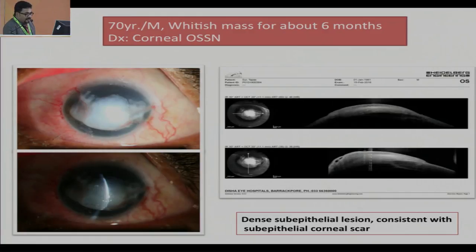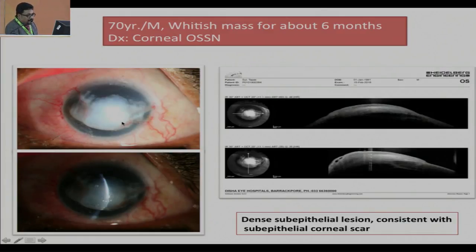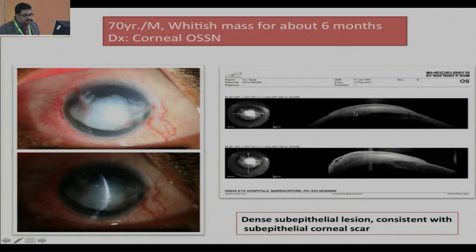Another patient was diagnosed as a case of pterygium because of feeder vessels and a corneal mass. On taking history, it was found that the patient underwent cataract surgery one year ago, had a dislocated intraocular lens, and one haptic of the IOL was touching the cornea. This correlated to localized pseudophakic bullous keratopathy with epithelial hypertrophy. On SOCT I could see dense subepithelial lesion consistent with subepithelial corneal scar and the underlying cornea was perfectly healthy. The treatment was epithelial debridement and IOL repositioning.